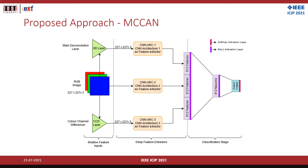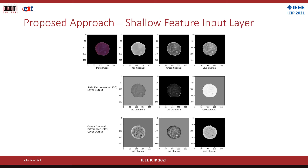In our proposed architecture, we have defined three stages: shallow feature inputs, deep feature extractors, and the classification stage. In the shallow feature input stage, we convert the RGB image using image processing techniques and the SD layer to provide a three-channel input layer. In the deep feature extractors, we have simple five-layer CNN architectures as feature extractors. In the classification stage, we concatenate all the features and use fully connected layers for classification.